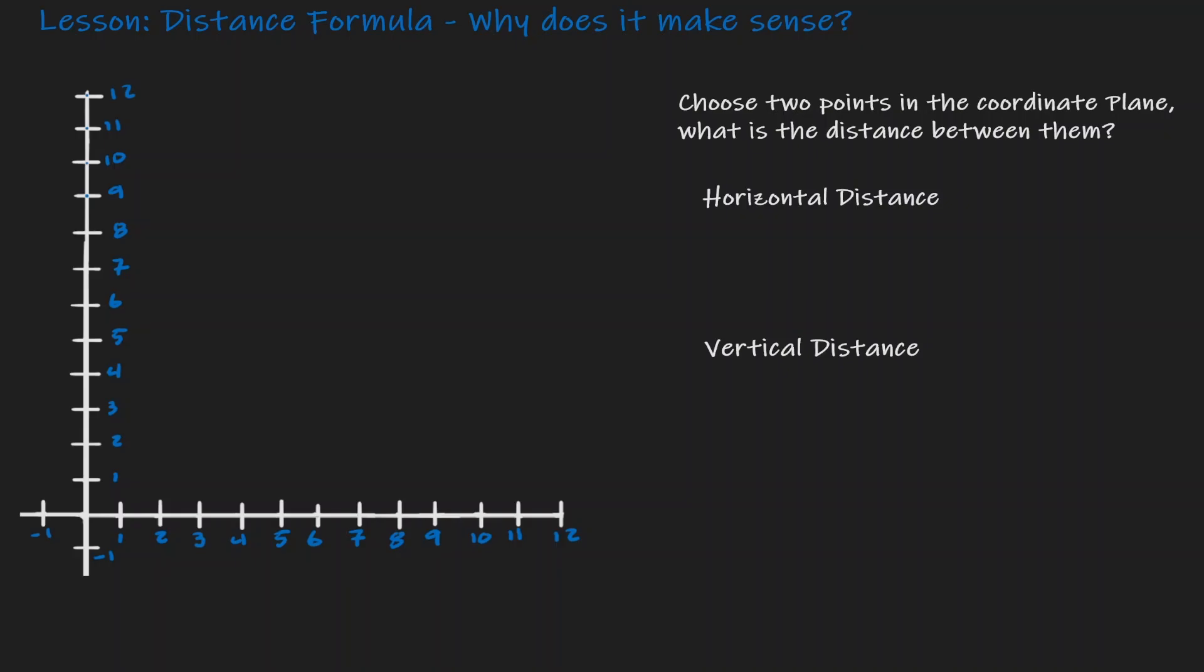Welcome! Today, we're going to make sense of the distance formula. So let's just choose two random points in the coordinate plane. Let me choose it right here, and let me choose it right here.